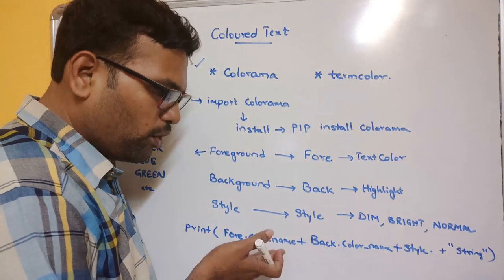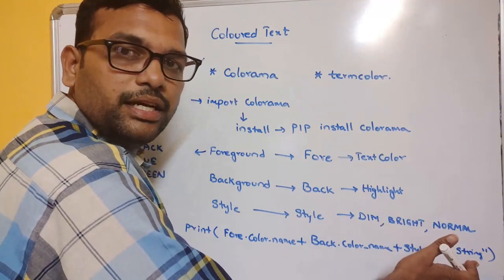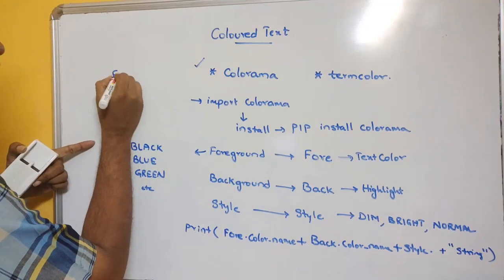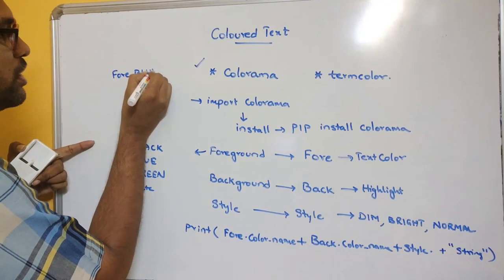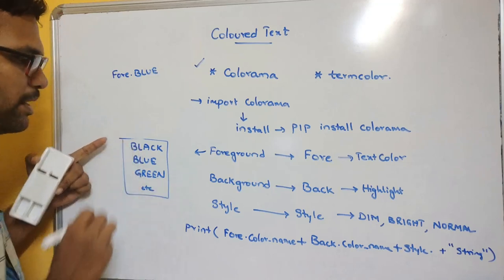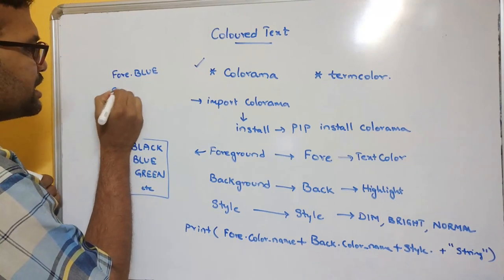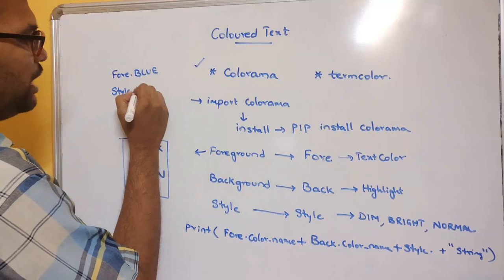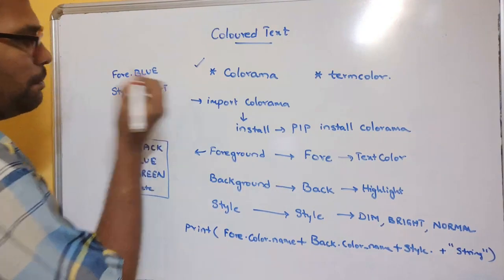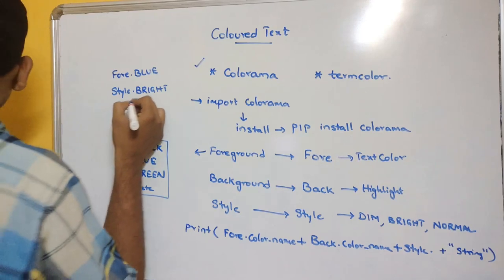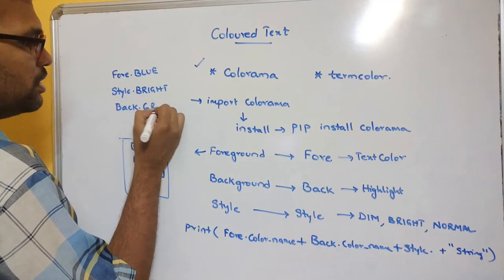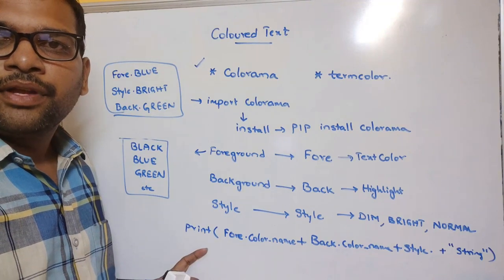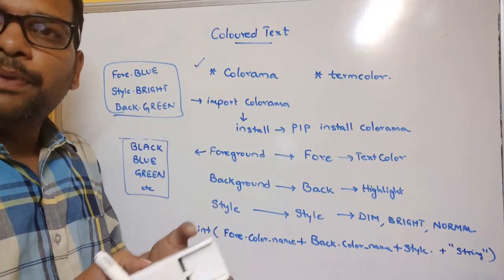The foreground color, background color, and style will automatically be applied to the particular string displayed. For example, to apply blue foreground: Fore.BLUE (F capital). For brightness: Style.BRIGHT. For green background: Back.GREEN (GREEN in capital). All of this is included in the print statement — this is how we display text in different colors using colorama.